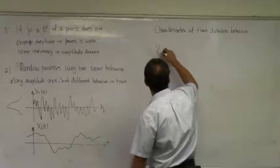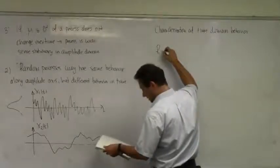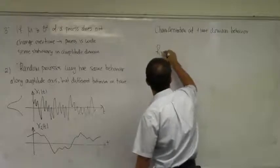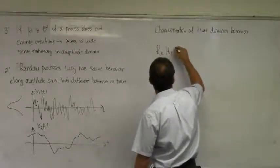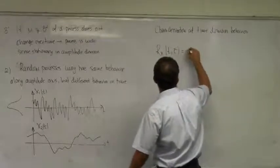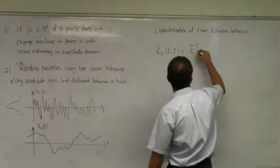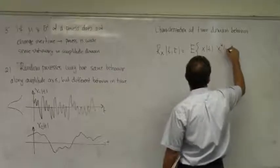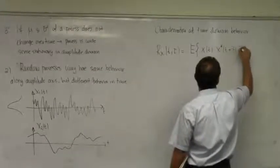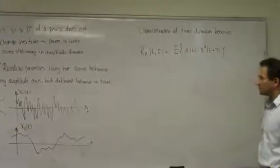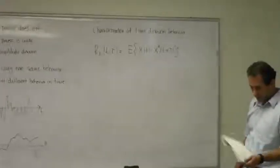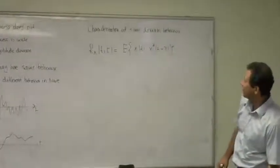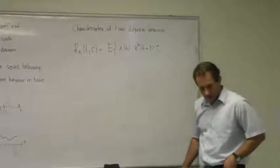The autocorrelation function r_x(t, τ) has expected value of x(t) times x complex conjugate of t plus τ. That's the definition of autocorrelation function.